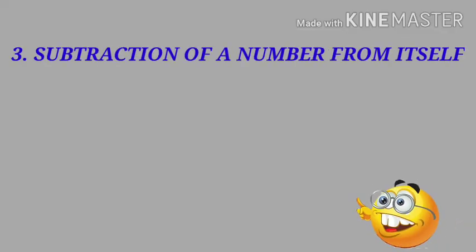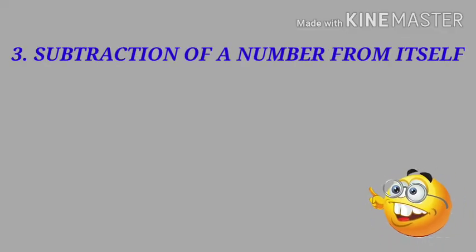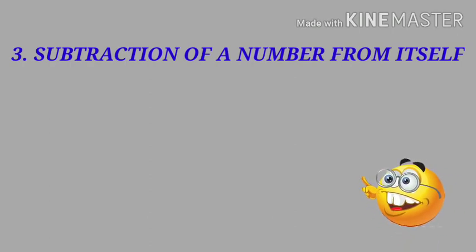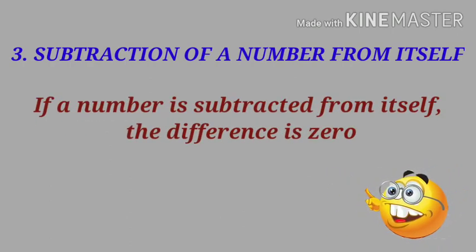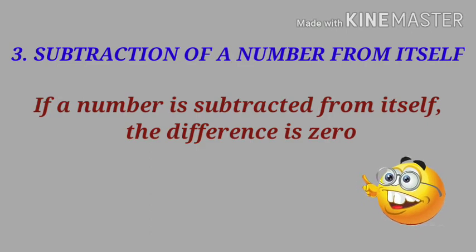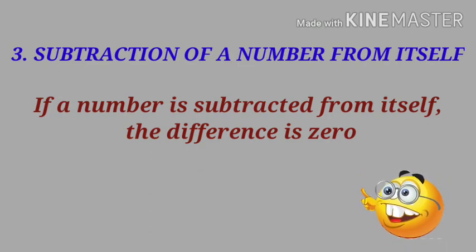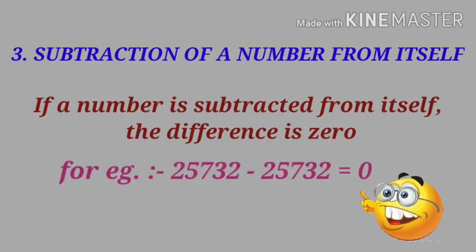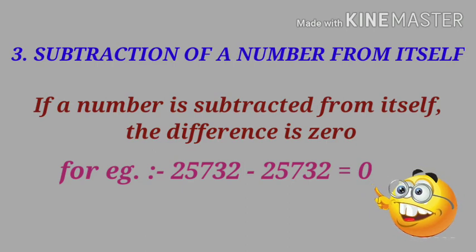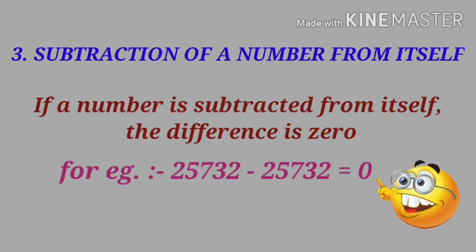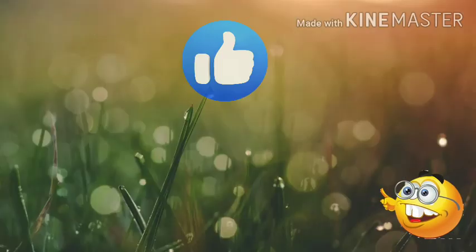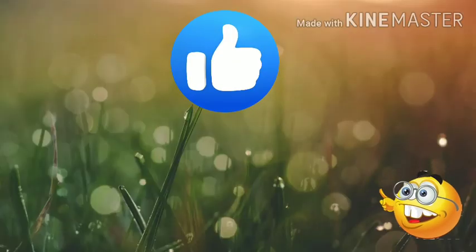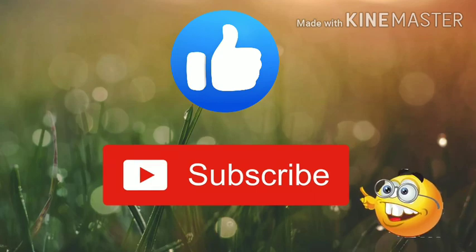Property three: subtraction of a number from itself. If a number is subtracted from itself, the difference is 0. For example, 25,732 minus 25,732 equals 0.